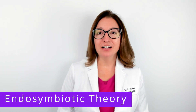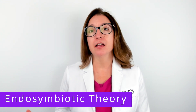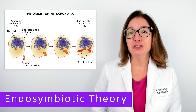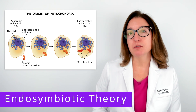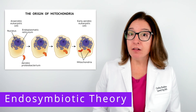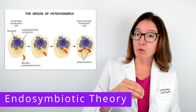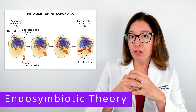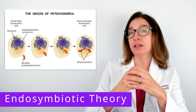The endosymbiotic theory explains how certain organelles, in particular mitochondria and chloroplasts, evolved from prokaryotic cells. The mitochondrion is an organelle in a eukaryotic cell where aerobic cellular respiration occurs. The endosymbiotic theory states that this organelle originally arose when a bacterium capable of aerobic cellular respiration was taken into a eukaryotic cell via phagocytosis and then remained in the cell as an intracellular component.